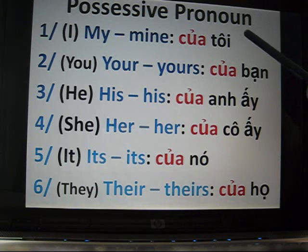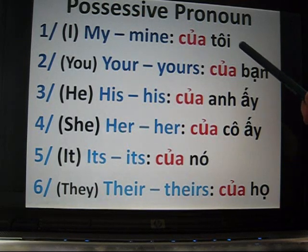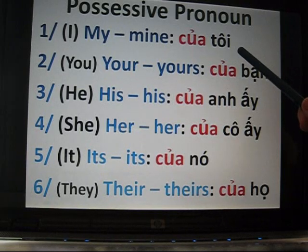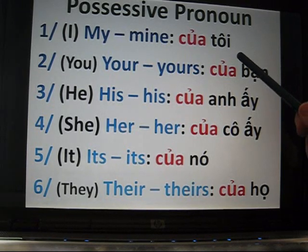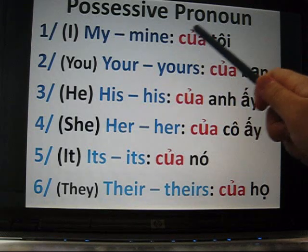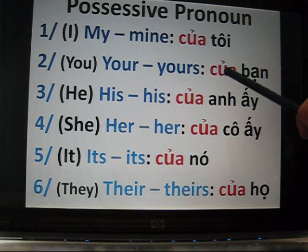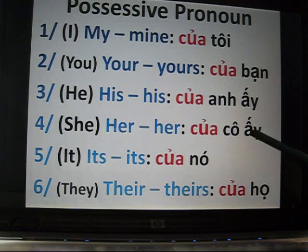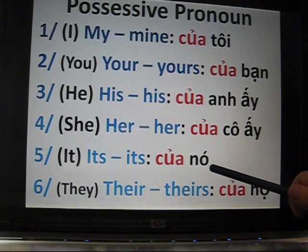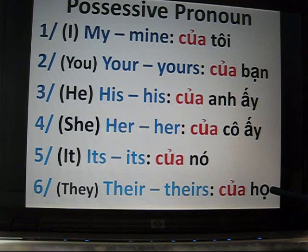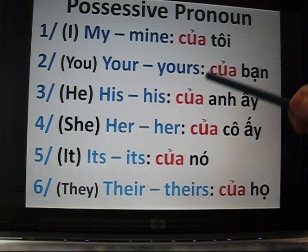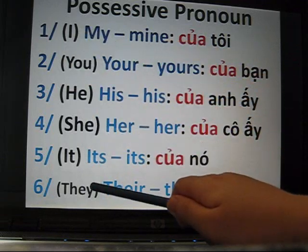If you don't remember how to use I and you in Vietnamese, I recommend you go back to the lesson about that. As you can see, I is tôi, you is bạn — exactly the same words you already know.